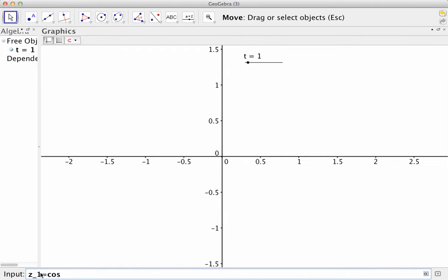And that's going to be the cosine of theta, and theta we don't know, but I'm going to call it t, which is using this slider. So right now it's going to do the cosine of 1 radian plus i times the sine of t.